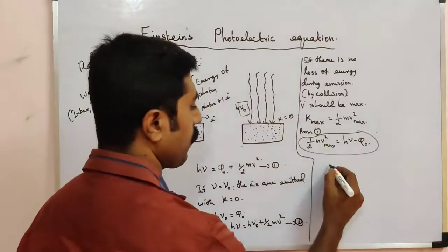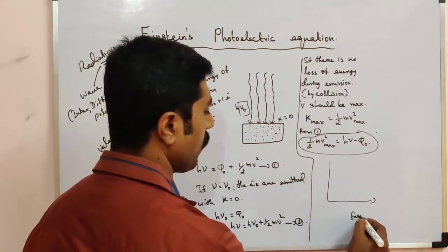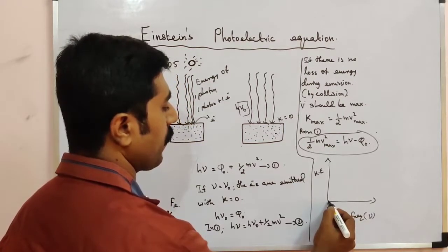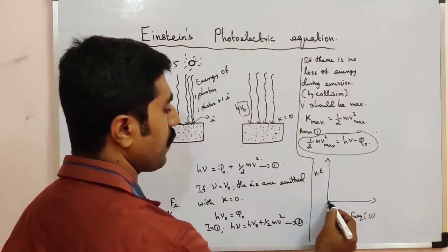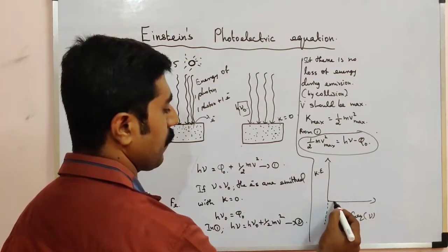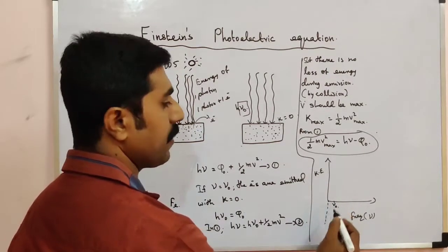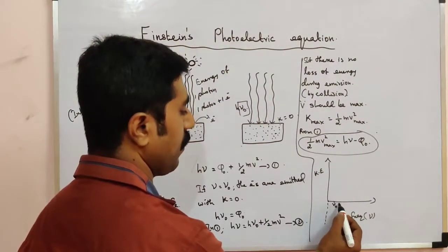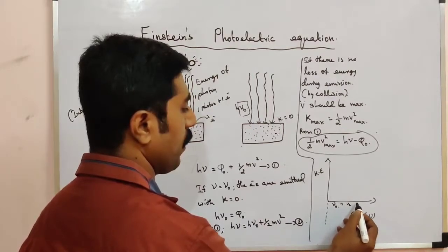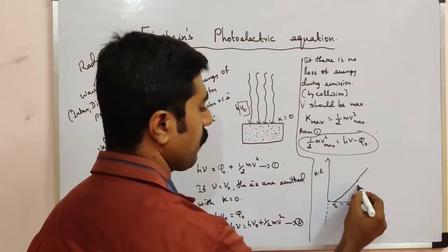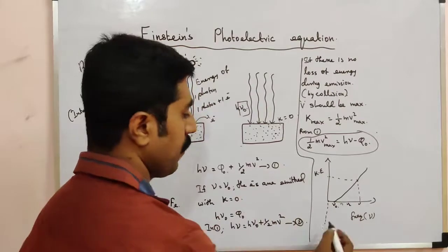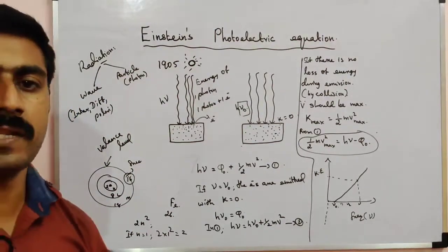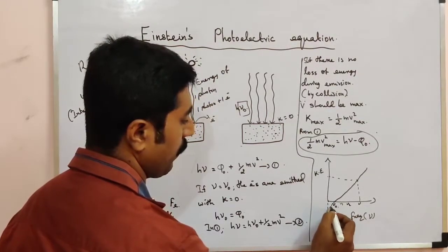Let us plot a graph between the frequency and the kinetic energy. On the x-axis, frequency 0 means kinetic energy of the moving electron is also 0. There is a minimum frequency ν₀ — the threshold frequency — at which the kinetic energy of emitted electrons is zero. As frequency increases (ν₁, ν₂...), kinetic energy slowly increases. Below the threshold frequency, there is no emission.